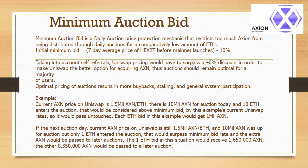Example: current AXN price on Uniswap is 1.5 million AXN per ETH. There is 10 million AXN for auction today and 10 ETH enters the auction — that would be considered above minimum bid by this example's current Uniswap rates, so it would pass untouched. Each ETH bid in this example would get 1 million AXN. If the next auction day the price is still 1.5 million AXN per ETH, and 10 million AXN was up for auction but only 1 ETH entered, that would surpass the minimum bid rate and the extra AXN would be passed to later auctions. The 1 ETH bid would receive 1,650,000 AXN, and the other 8,350,000 AXN would be passed to a later auction.